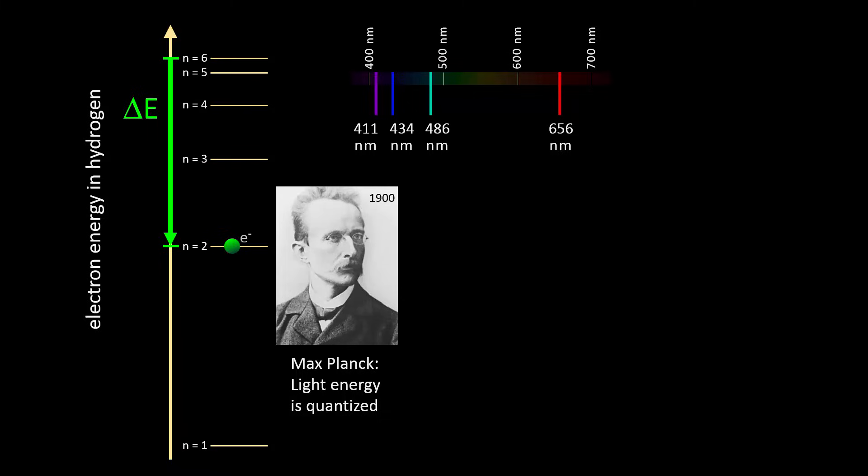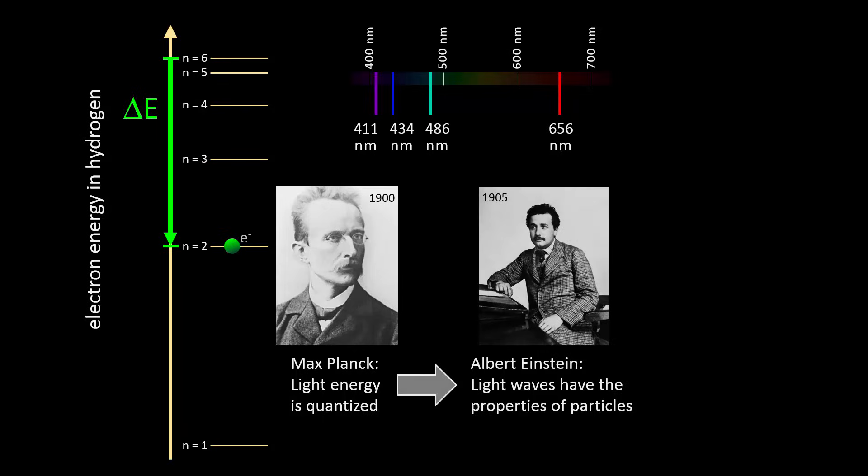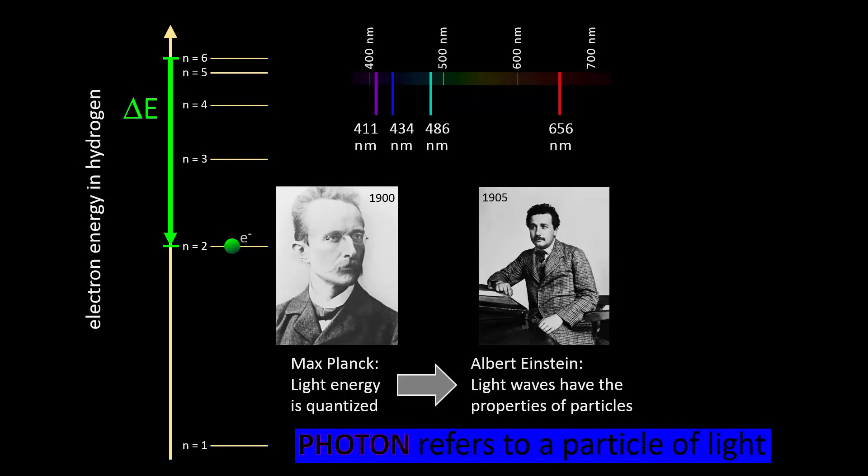Five years later, in 1905, Einstein took that a giant step further with his photoelectric effect, experimentally showing that light has momentum, and momentum is a property derived from mass, but light has no mass, so the quantized light wave was behaving as if it was a particle, which we call a photon, which incidentally got Einstein a Nobel Prize.